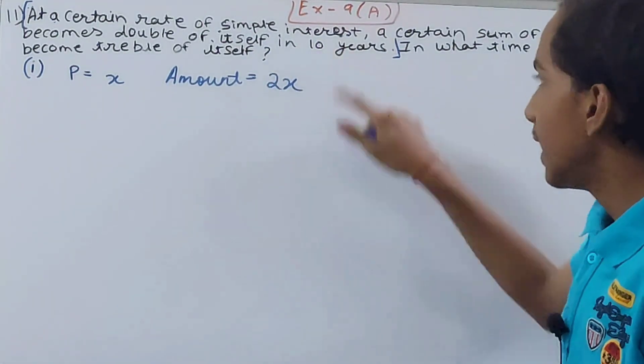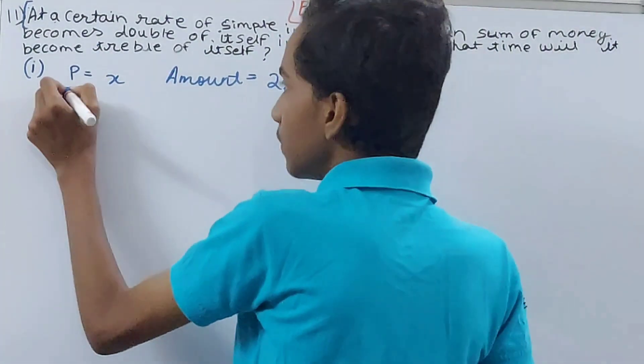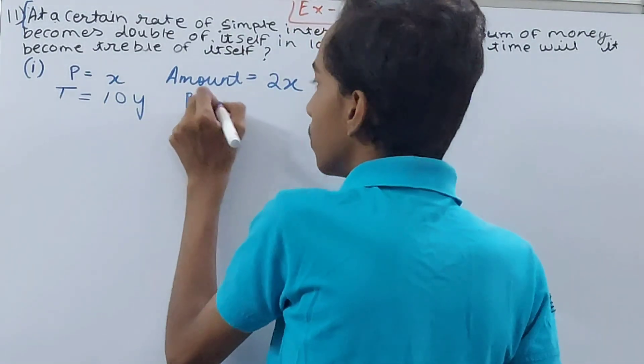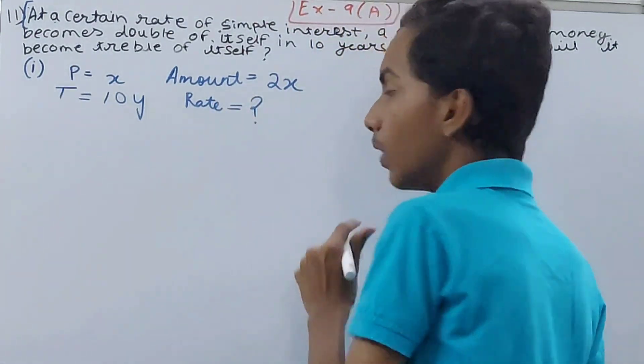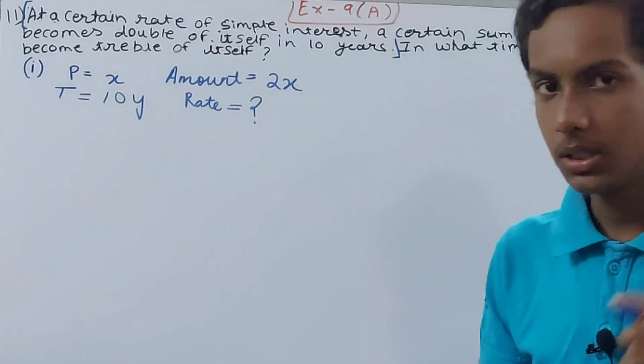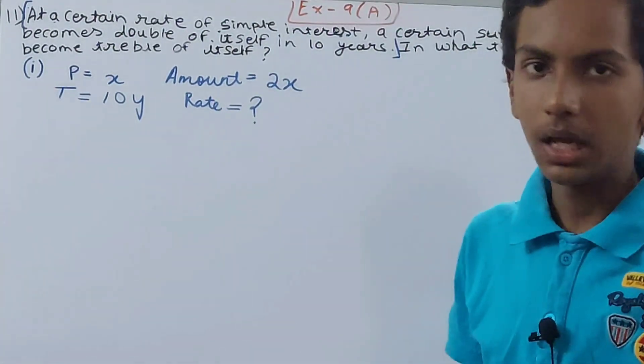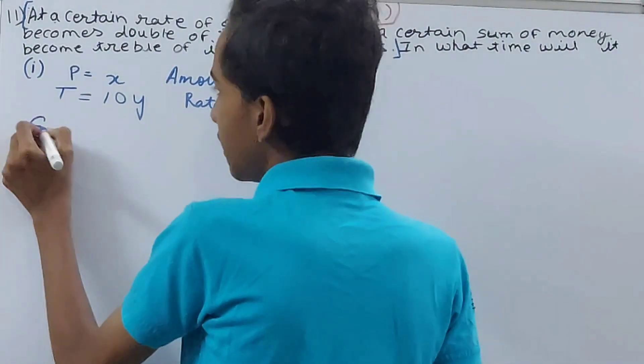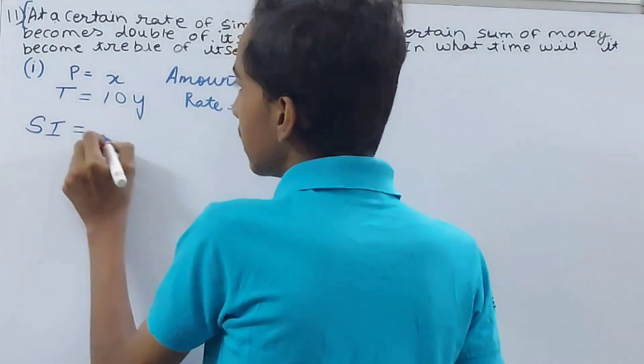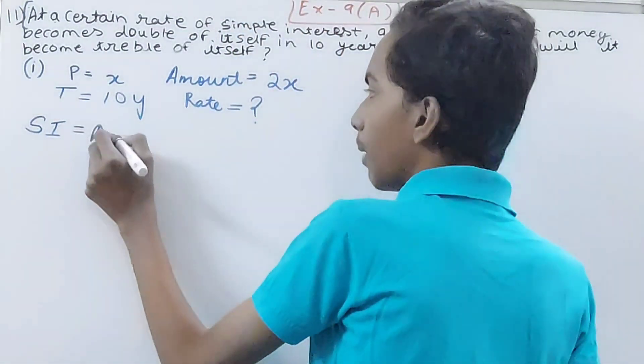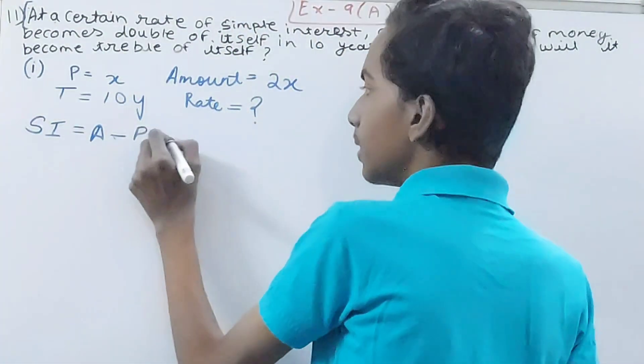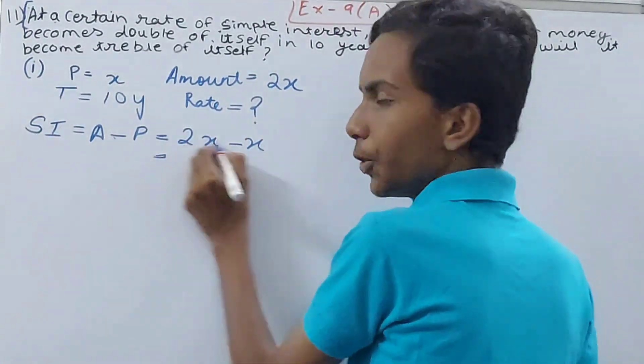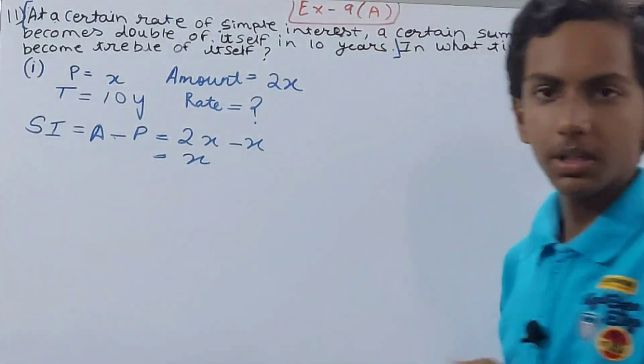So I'll put a question mark after rate. What is not given we have to find, that rate isn't given so we'll calculate the rate. But one thing more we have to see here, that the simple interest is also there, which is going to be amount minus principle. Amount is 2x minus principle is x. This is what, 2x minus x = x. So simple interest is also going to be x only.